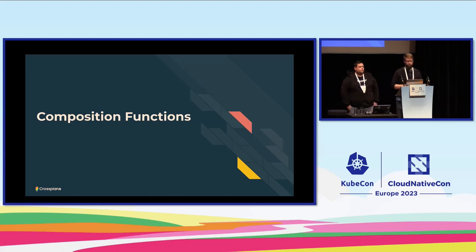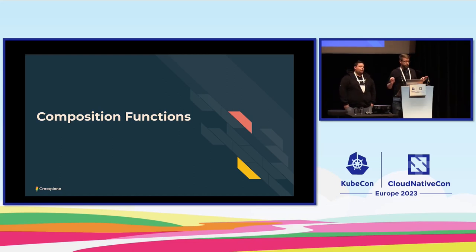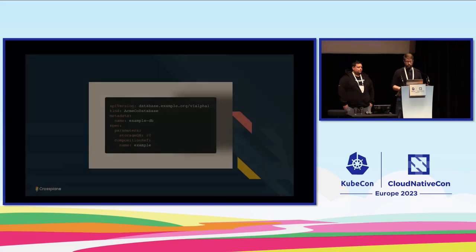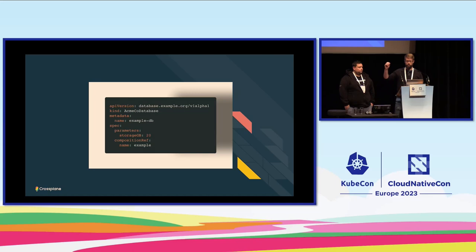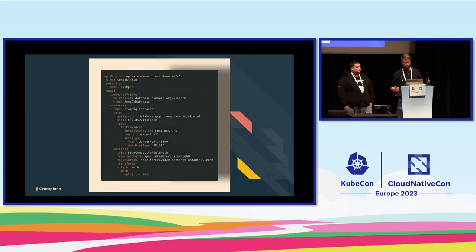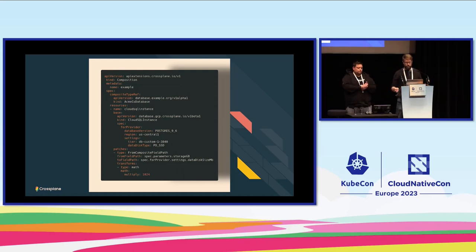Now we start the deep dive — new functionality that has not existed at a previous KubeCon. Compositions are a very powerful concept in Crossplane, but they've been somewhat limiting. You can expose a simple database API to developers, let them configure storage size, and hide the underlying complexity — but the current limitations are: no complicated logic, no flow control, no conditionals, no advanced programming features. The list of resources being composed is static, there's no variability, and you can't get real runtime information to influence them. Patching and transforming in Crossplane composition is not a programming language.